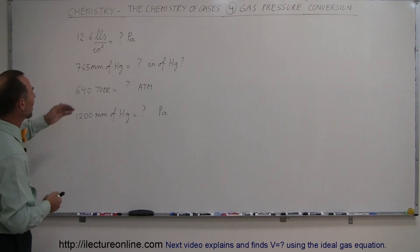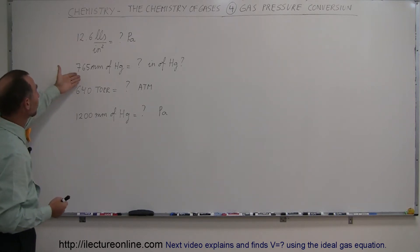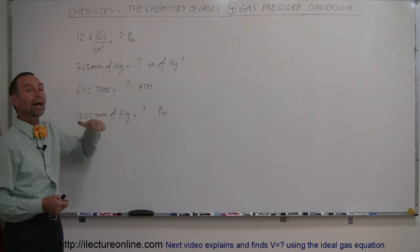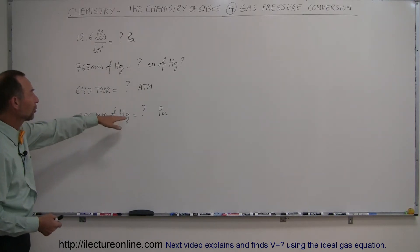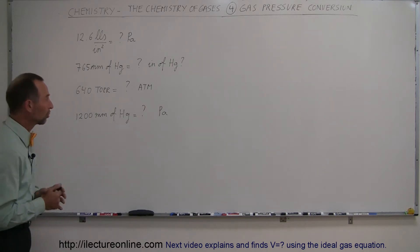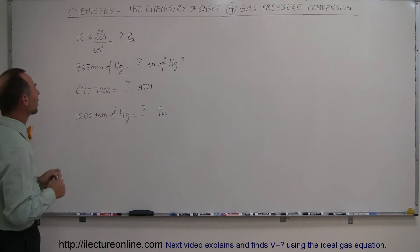So let's say we had something like 12.6 pounds per square inch of pressure, how do you convert that to Pascals? Or we had 765 millimeters of mercury, how do you change that to inches of mercury? Or let's say you had 640 torr of pressure, how do you convert that to atmospheres? And let's say you had 1200 millimeters of mercury, how do you turn that into the standard units of Pascals or Newtons per square meter? There's some easy ways to do that, so let's show you how to do that one at a time.